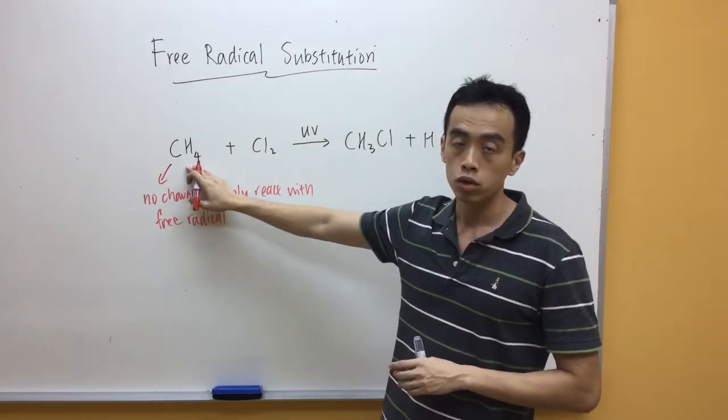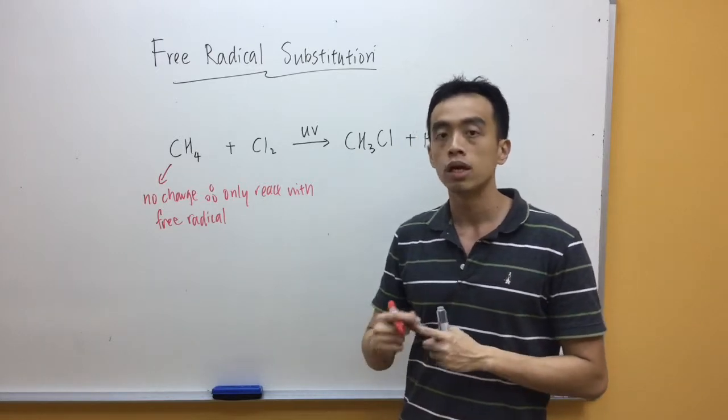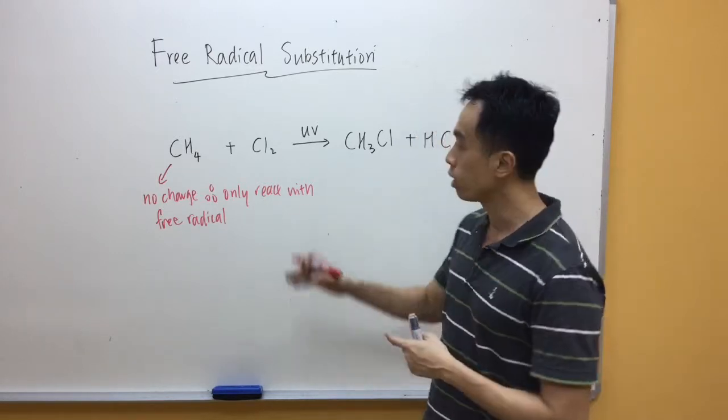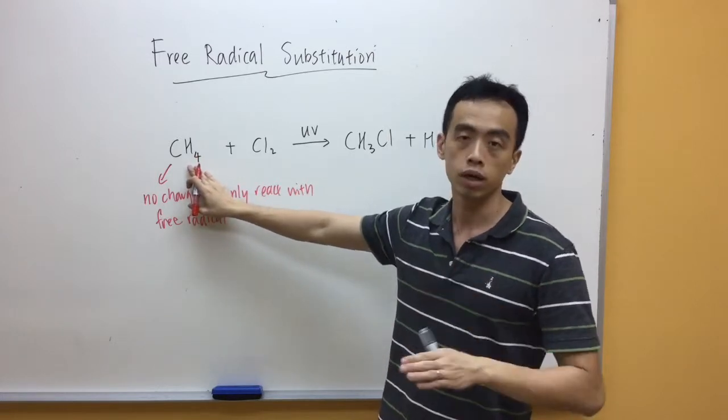Now explaining why alkanes undergo substitution is pretty simple because my carbon in alkanes is saturated, so it cannot undergo addition reaction, otherwise we have five bonds which is not allowed. So it must undergo substitution reaction when one Cl is attached to my carbon and it must kick up one hydrogen.